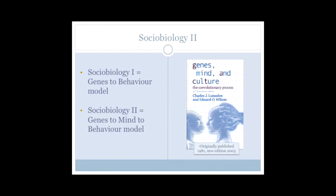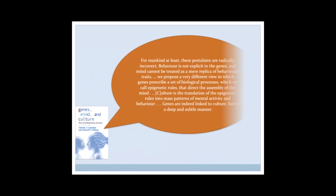And we can see this in the quote that I've got up here. For mankind, at least, these postulates of radically incorrect behavior is not explicit in the genes, and mind cannot be treated as a mere replica of behavioral traits. We propose a very different view, in which genes prescribe a set of biological processes, which we call epigenetic rules, that direct the assembly of the mind. Culture is the translation of the epigenetic rules into mass patterns of mental activity and behavior. Genes are indeed linked to culture, but in a deep and subtle manner.